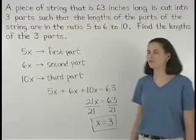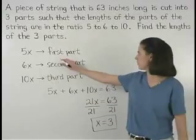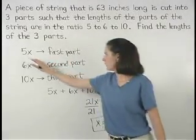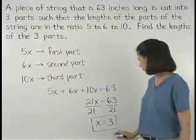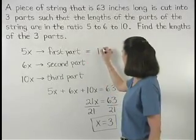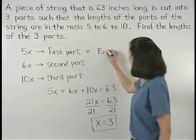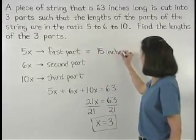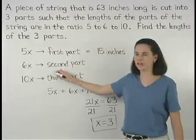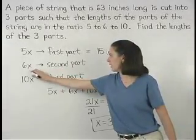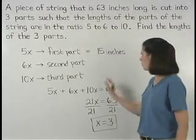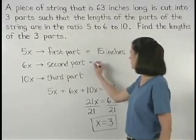So the length of the first part of the string, 5x, is 5 times 3, or 15 inches. And the length of the second part of the string, 6x, is 6 times 3, or 18 inches.